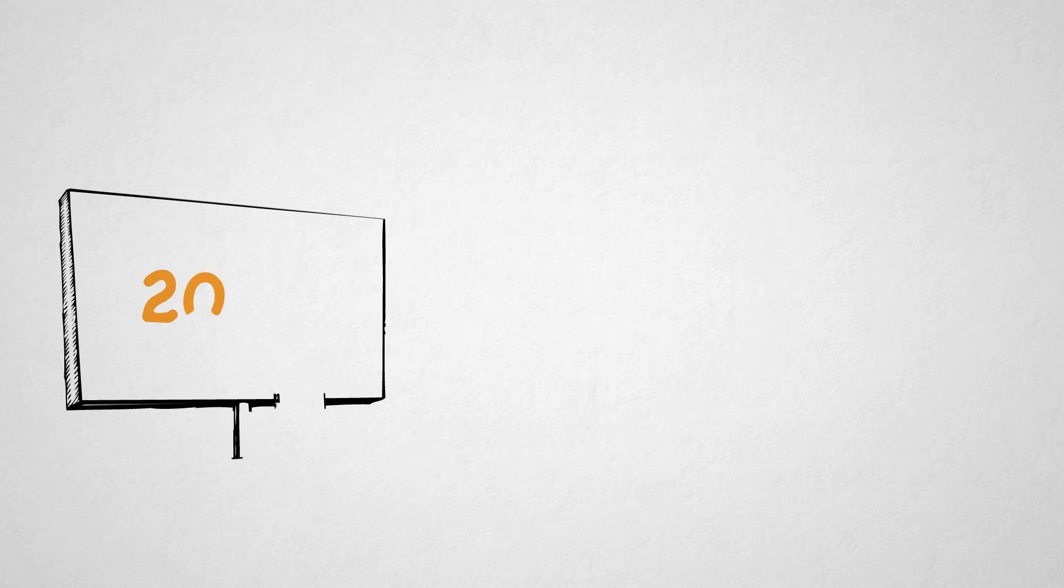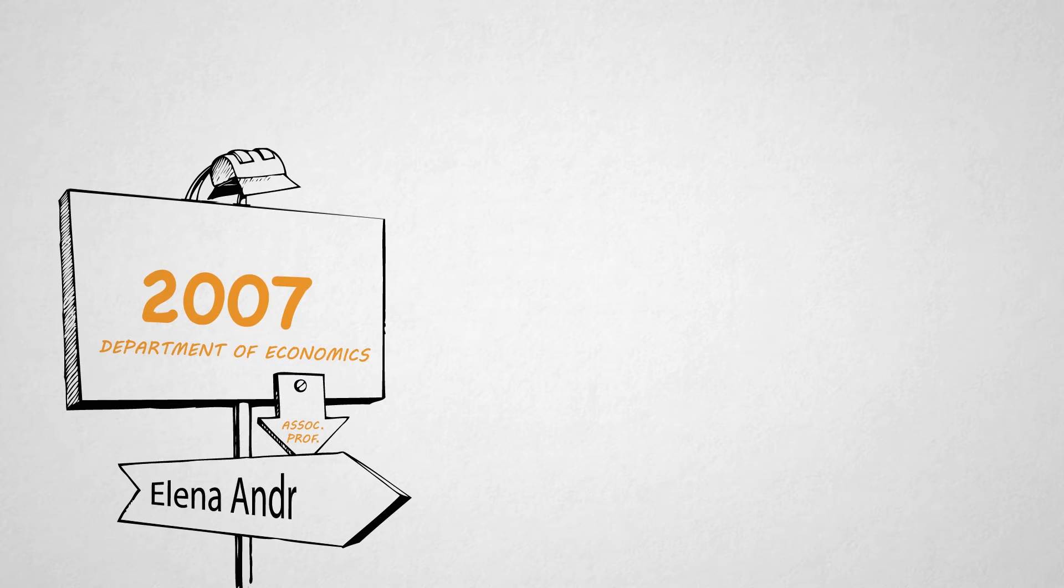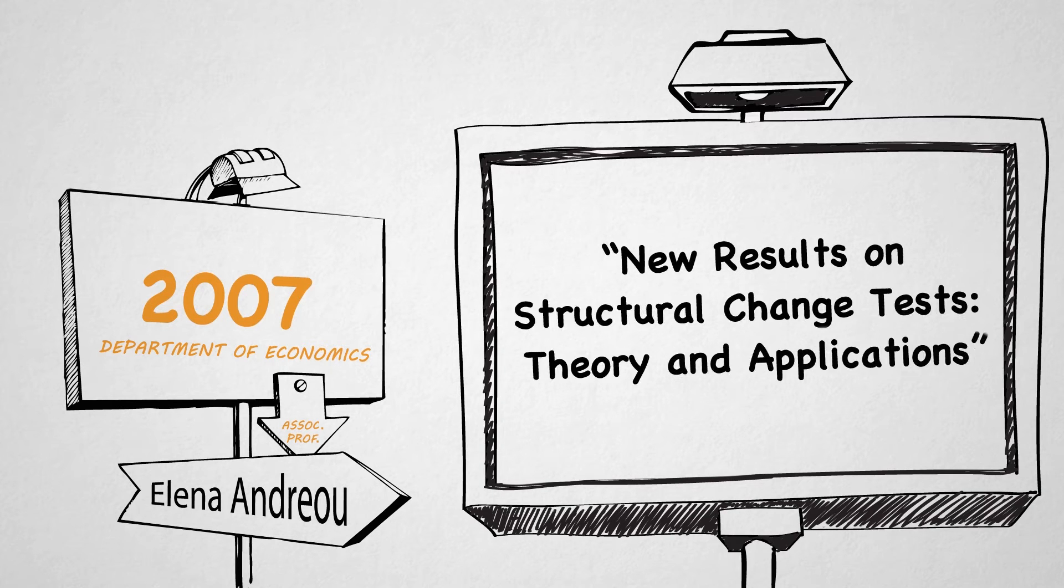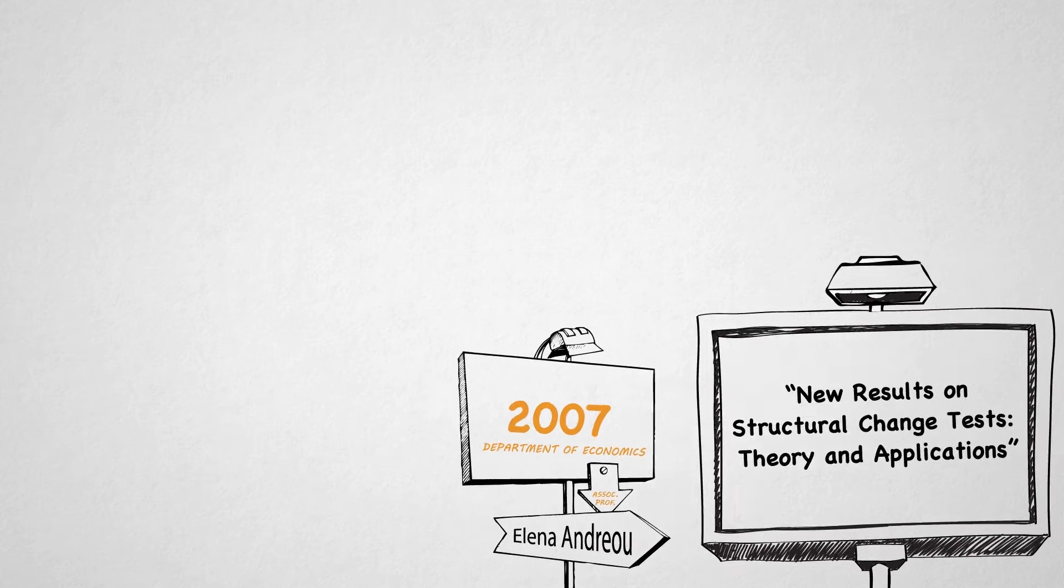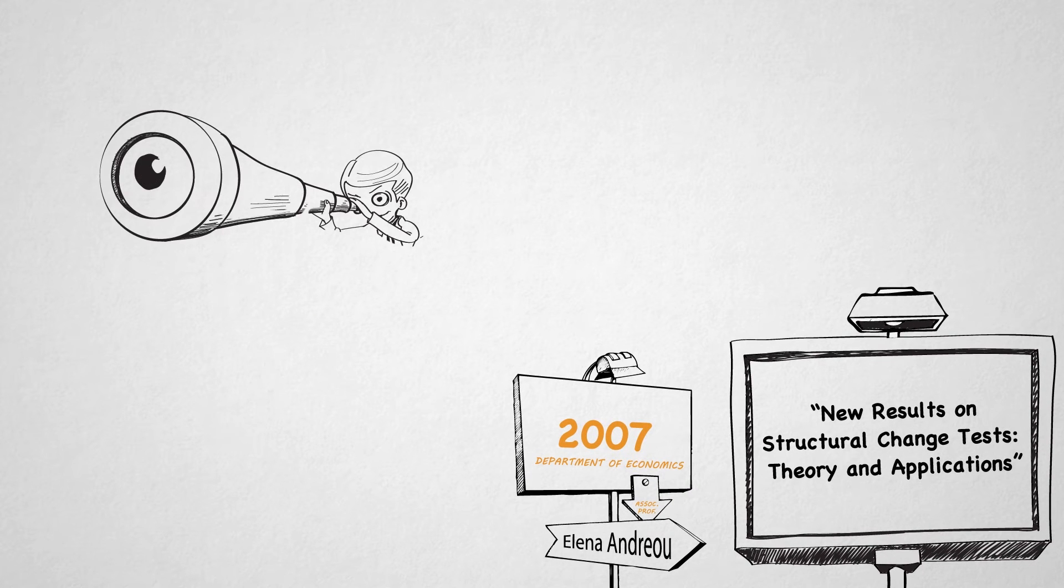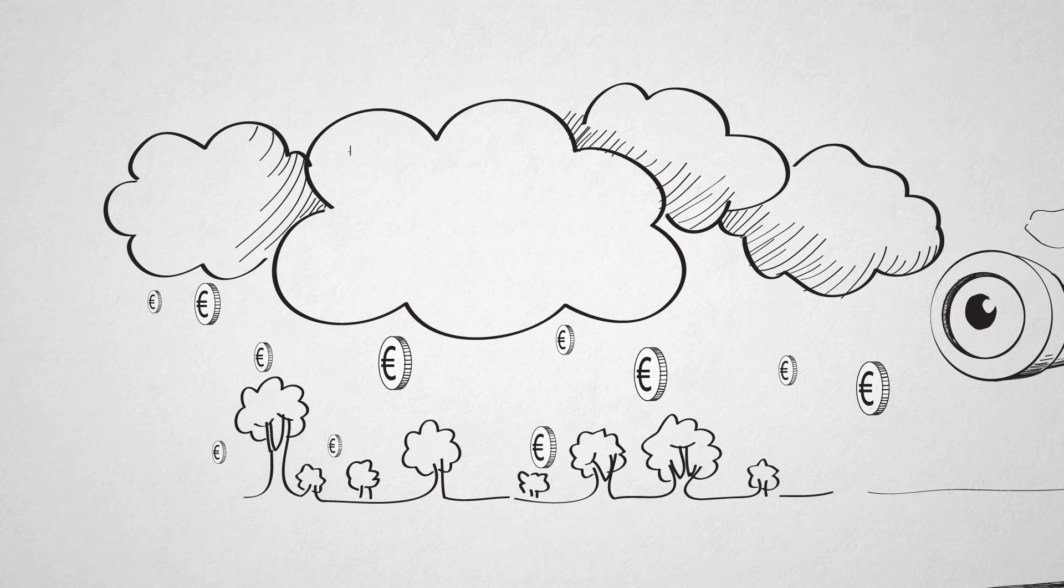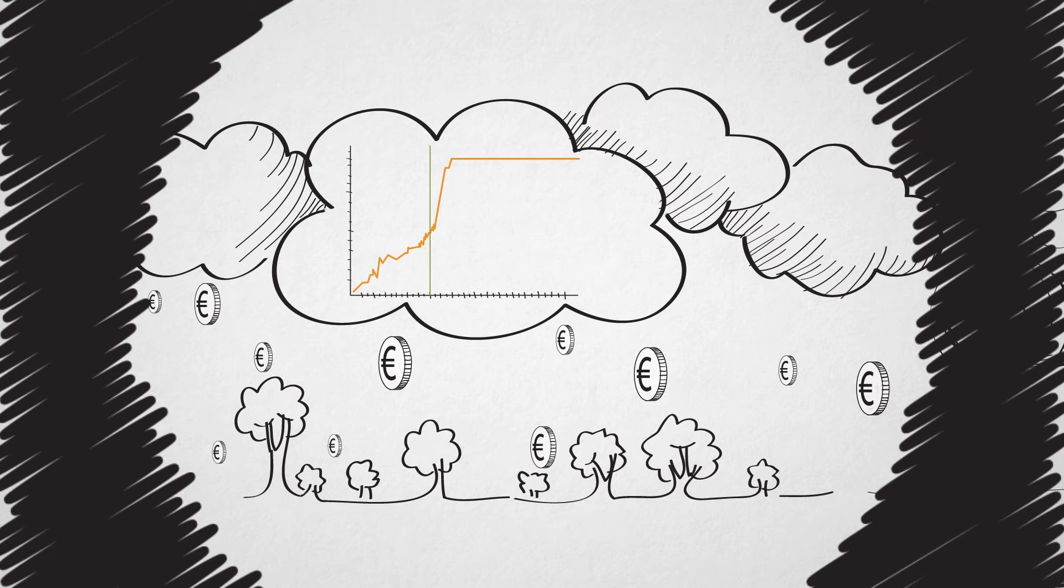In 2007, Associate Professor Elena Andreou was awarded an ERC Starting Grant of 1.5 million euros to study structural break tests in the area of econometrics, proposing new ideas and methods, as well as applications of those in the area of macroeconomics and finance.